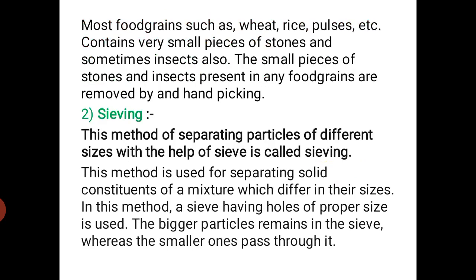Most food grains such as wheat, rice, pulses, etc. contain very small pieces of stones and sometimes insects. The small pieces of stones and insects present in food grains are removed by hands, and that process is known as handpicking.